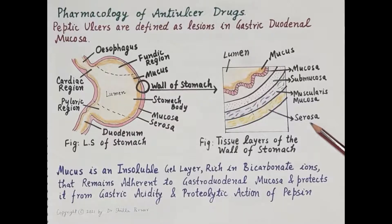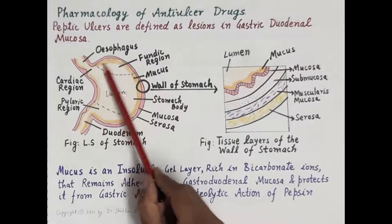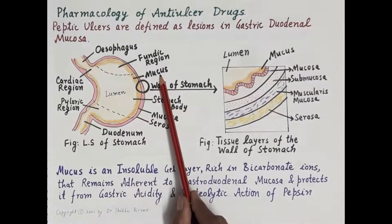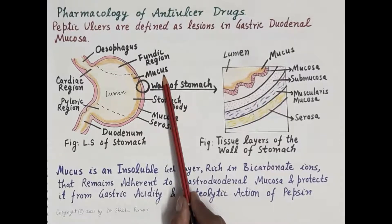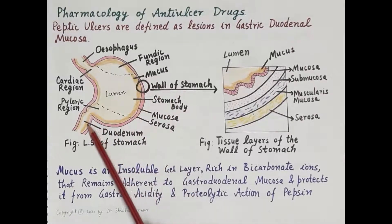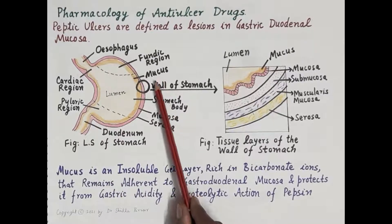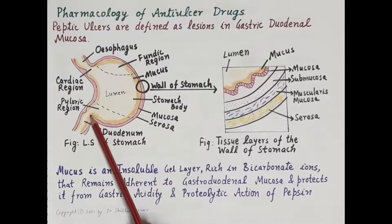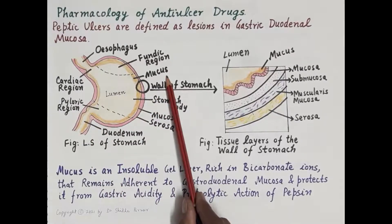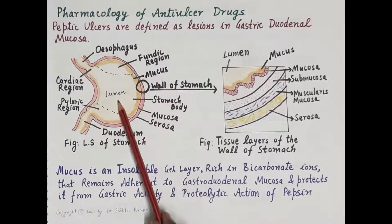This diagram also shows mucus — an insoluble gel layer that remains adherent to the gastroduodenal mucosa. This mucus gel layer protects the gastroduodenal mucosa from the corrosive effect of acid and the proteolytic effect of pepsin. The acid and pepsin are present in the lumen of the stomach, mixed with food.